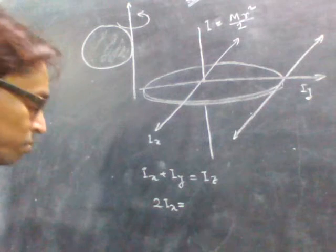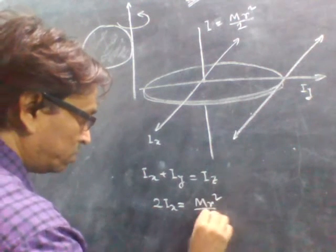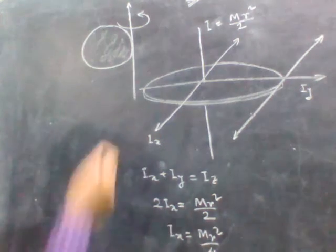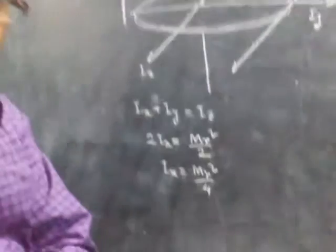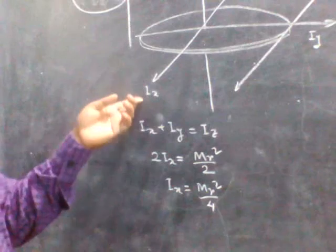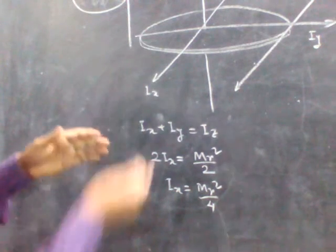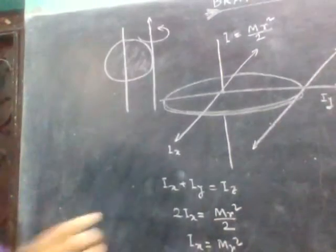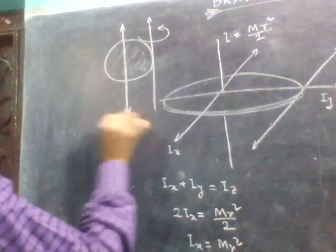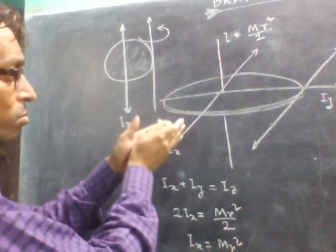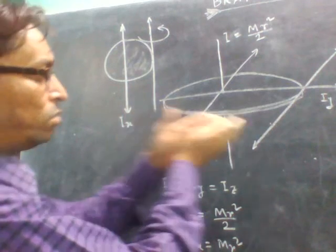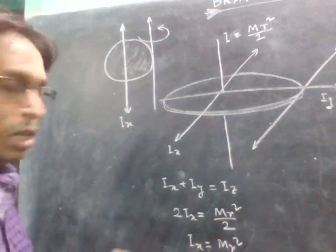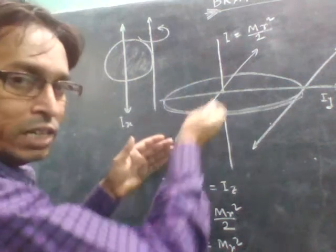So 2·Ix equals IZ, which equals MR²/2. Therefore Ix equals MR²/4. Now we have got Ix. We have to shift the axis from Ix to the required axis, so now we apply the parallel axis theorem. At first we applied perpendicular axis theorem to find Ix from the Z-axis to the X-axis plane. After getting Ix, we have to shift it to the extreme corner — this distance is equal to the radius.